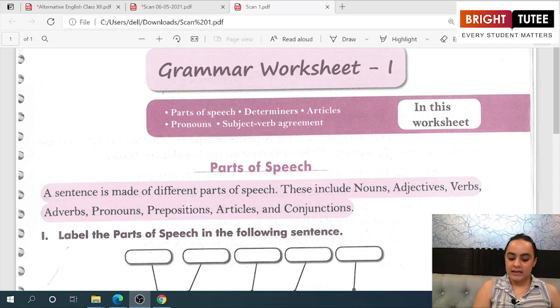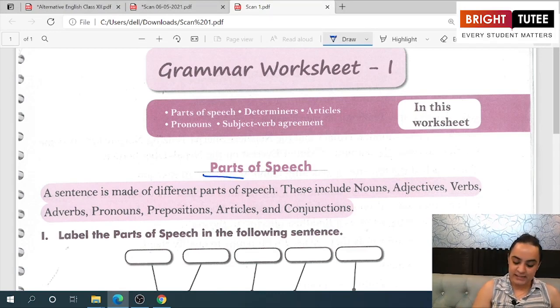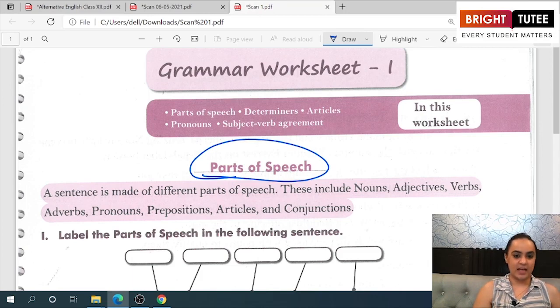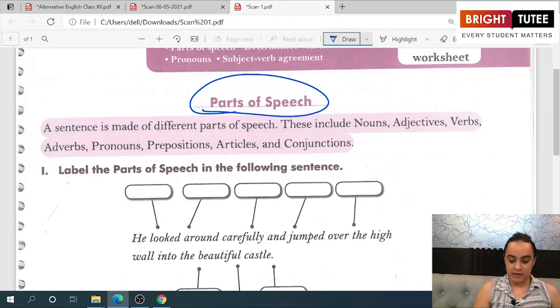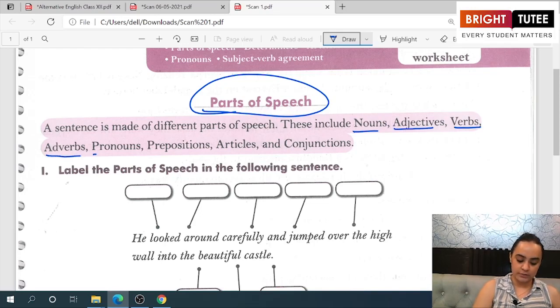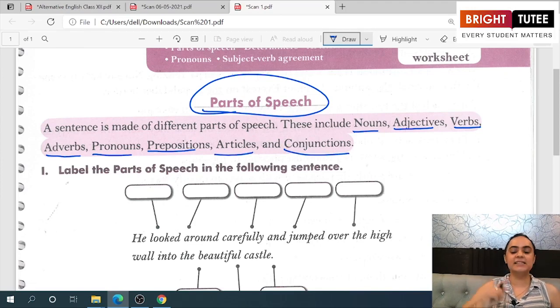Parts of speech is the basis of every sentence. Every sentence that we speak, write, or read is made up of different parts of speech. What are the different parts of speech? We have nouns, adjectives, verbs, adverbs, pronouns, prepositions, articles, and conjunctions.